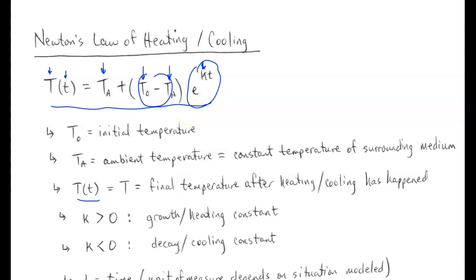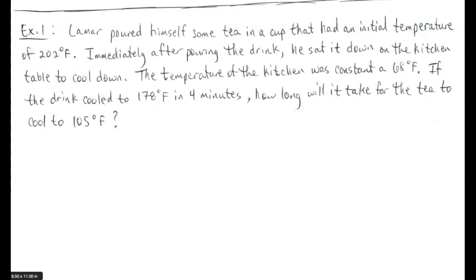Let's look at our first example. A person named Lamar poured himself some tea in a cup that had an initial temperature of 202 degrees Fahrenheit. Immediately after pouring, he sat it down on the kitchen table to cool. The temperature of the kitchen was a constant 68 degrees Fahrenheit. If the drink cooled to 178 degrees Fahrenheit in four minutes, how long will it take for the tea to cool down to 105 degrees?